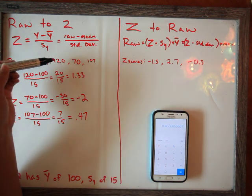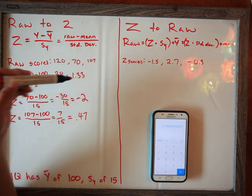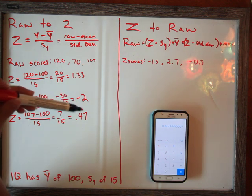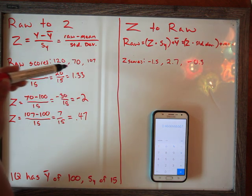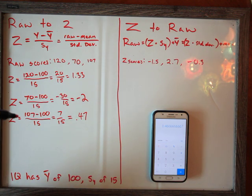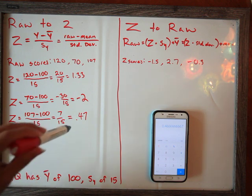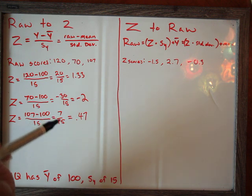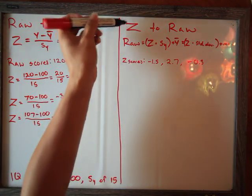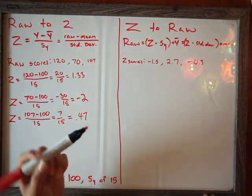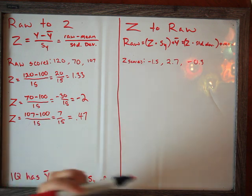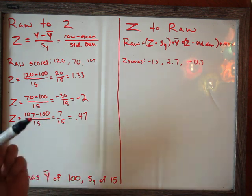So there are our three z-scores. The person with a raw score of 120 has a z-score of 1.33, meaning they are 1.33 standard deviations above the mean. The person with an IQ of 70 has a z-score of negative 2, meaning they are two standard deviations below the mean. The last person has a z-score of 0.47, meaning they are about half a standard deviation above the mean. Now let's go over converting z-scores back to raw scores — sometimes you have a z-score and want to know the corresponding raw score.